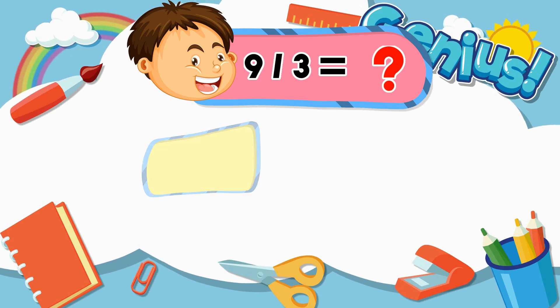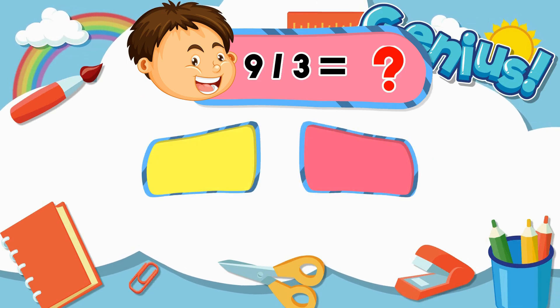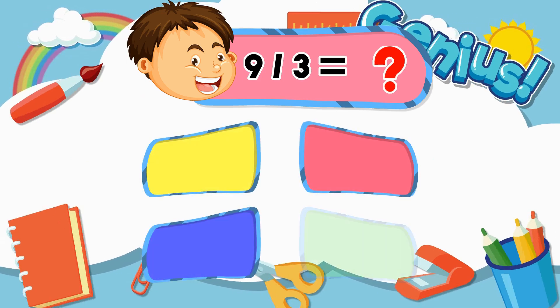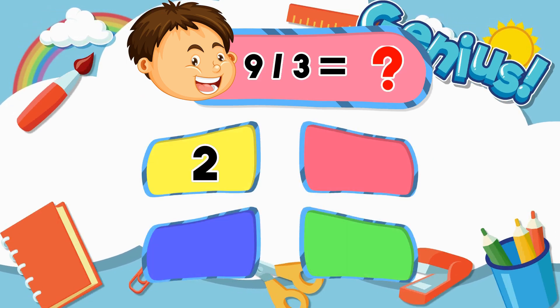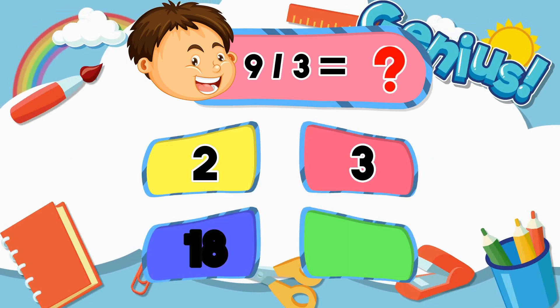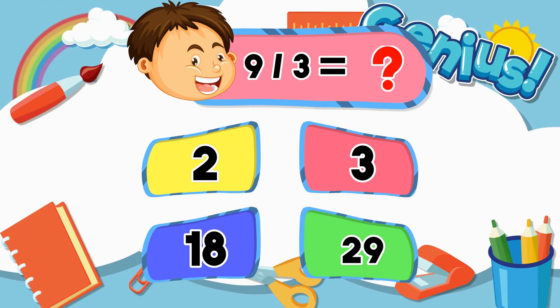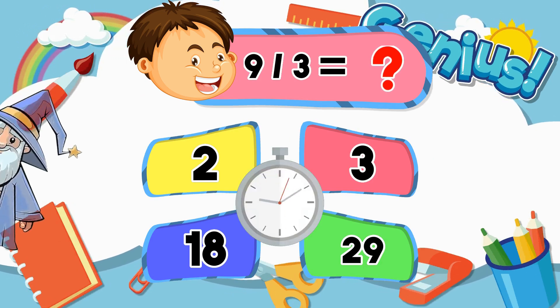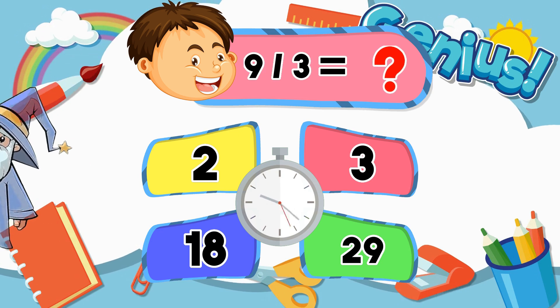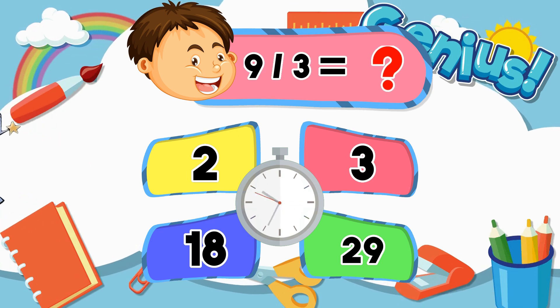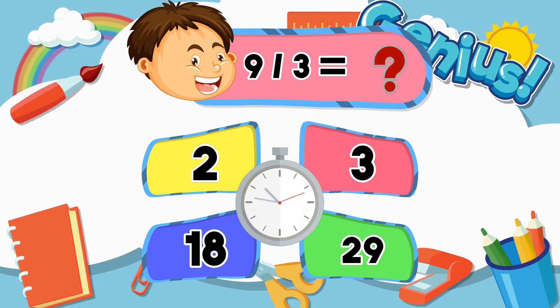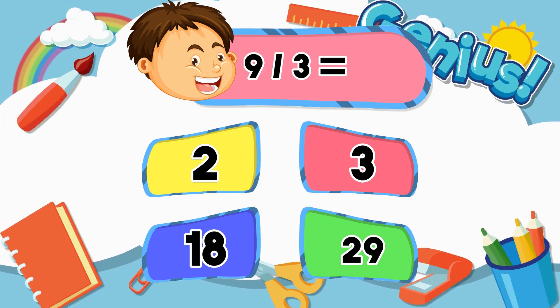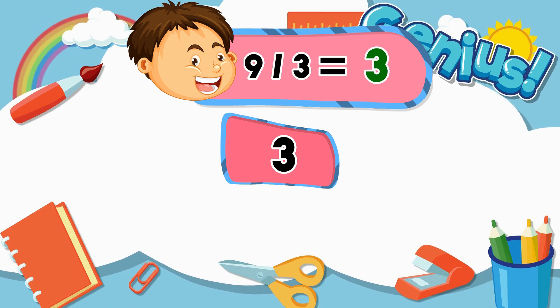What is 9 divided by 3? 2, 3, 18, 29. Answer: 3.